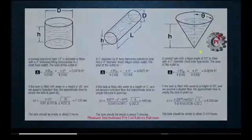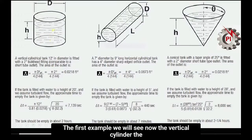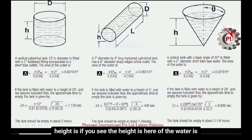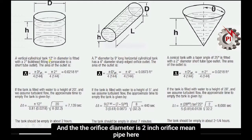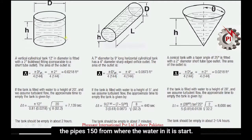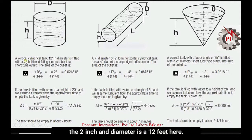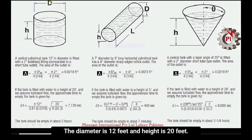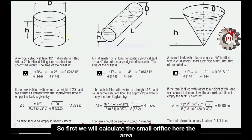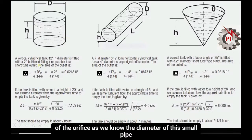For the first example, we consider a vertical cylinder. The height of the water is 20 feet, the tank diameter is 12 feet, and the orifice diameter (the small pipe from where water discharges) is 2 inches.